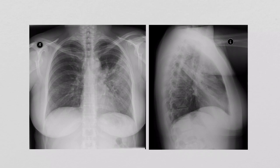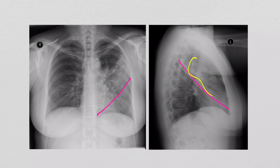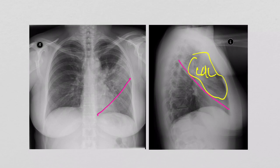Here's another PA and lateral. We can see some white stuff on the left side. Drawing the fissures, it's hard to say from the PA alone — there's white stuff in multiple areas. But looking at the lateral, it's clear that most of that infiltrate is up here, making this a left upper lobe pneumonia. Looking back at the PA, some of that attenuation may actually be due to breast tissue artifact, and the heart in that area may also be making it look a little whiter than normal.